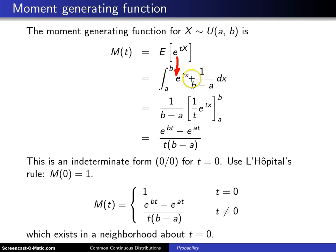Now this 1 over b minus a can come out front of the integral as a constant. It doesn't contain x. And then the integral of e to the tx with respect to x is 1 over t times e to the tx. When you plug in b and when you plug in a,